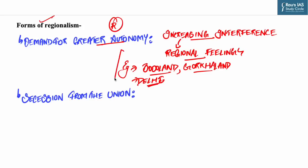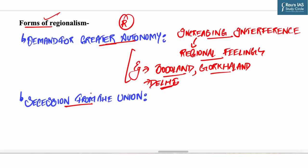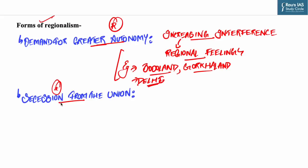Another form of regionalism is secession from the union, which is the most dangerous form. It emerges when a state demands separation from the center and tries to establish an independent identity of its own. Examples include Manipur, Mizoram, and Tripura.